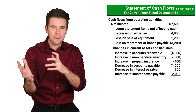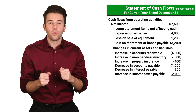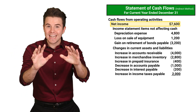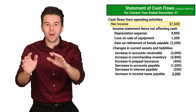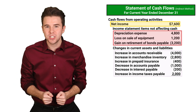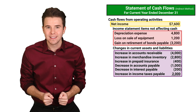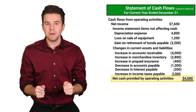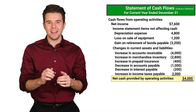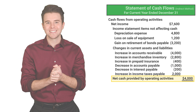So, to wrap it up, we take net income and add or subtract each of the adjustments. This gives us net cash provided by operating activities. Thank you.